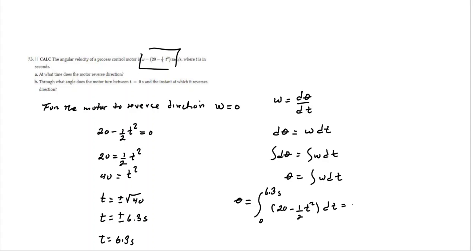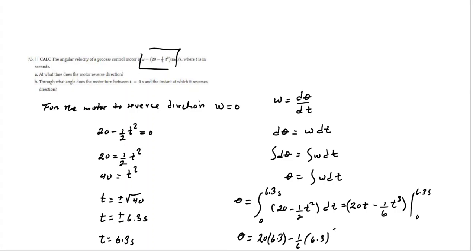Finding that integral gives us 20t minus one-sixth t cubed, evaluated from 0 to 6.3 seconds. So θ equals 20 times 6.3 minus one-sixth times 6.3 cubed, which gives us 84 radians. So the answer to the question — through what angle does the model turn between t equals 0 seconds and the instant at which it reverses direction — is 84 radians.